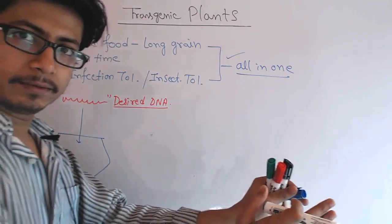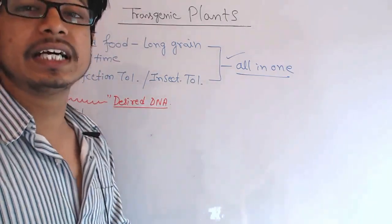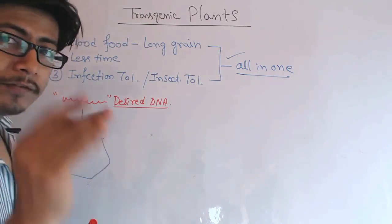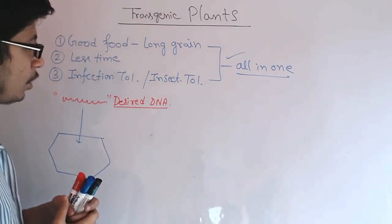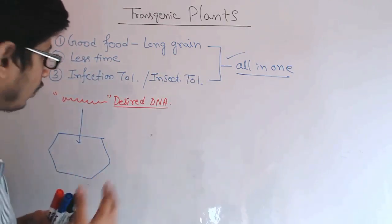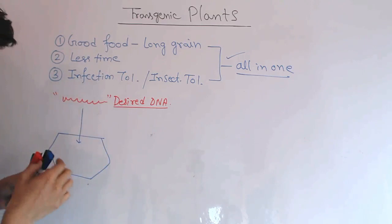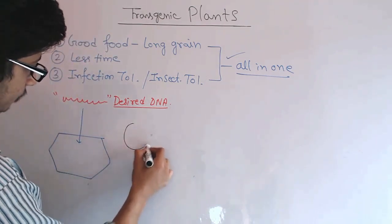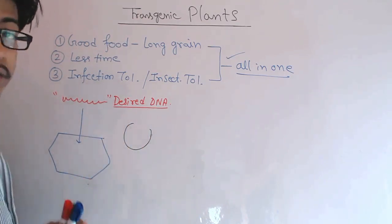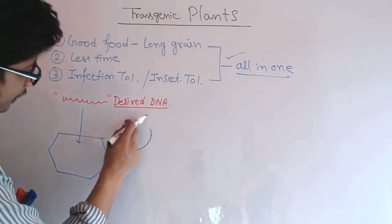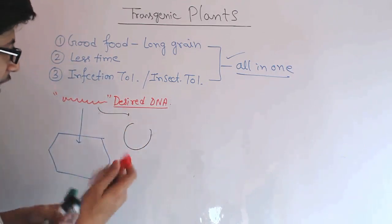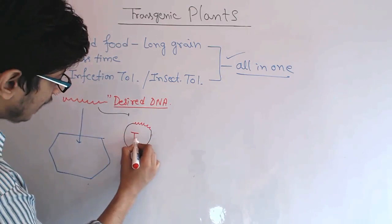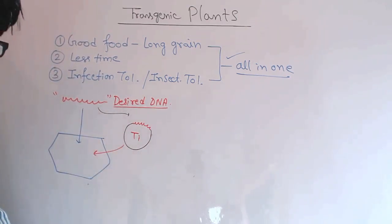We insert the desired DNA inside the plant cell, allow the plant to grow, and once it grows, it produces better quality food very fast and is insect- and infection-tolerant. But how do we insert DNA inside the plant? If we directly insert bare DNA, the plant cell will degrade it. So the idea of gene delivery uses recombinant DNA technology. We take the desired DNA and also a recombinant plasmid known as the Ti plasmid, extracted from the bacterium Agrobacterium tumefaciens.